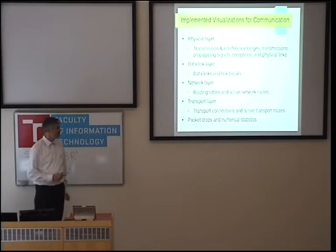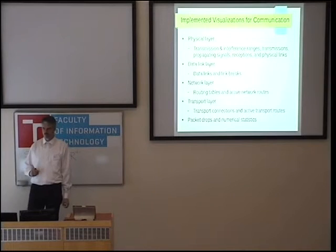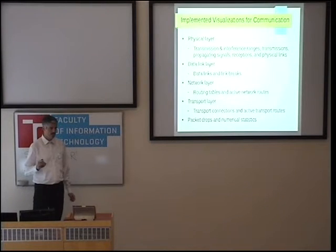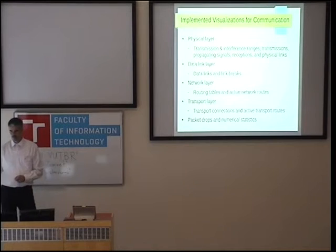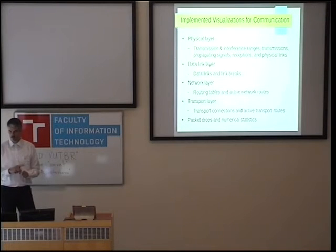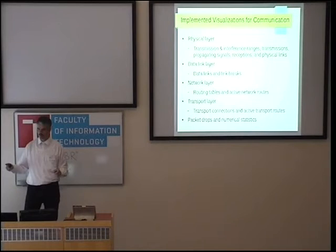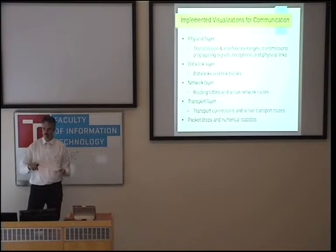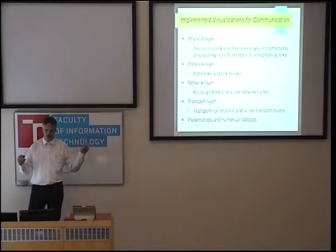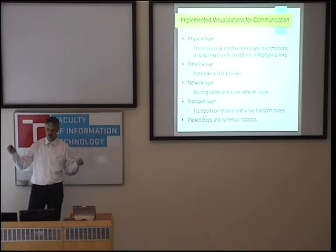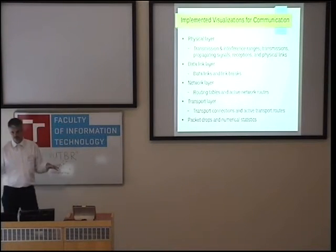Active network routes are something different: whenever a packet goes from node A to B through a series of nodes, there will be a path drawn from A to B through all the intermediate nodes. The packet has to enter the network layer of node A and leave the network layer of node B — it has to be the same packet — and then the visualizer will draw the path automatically.